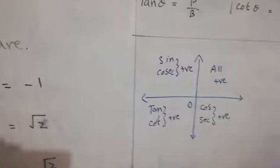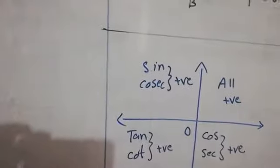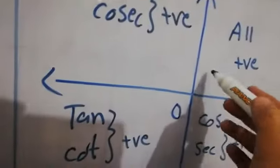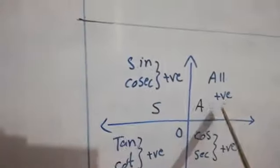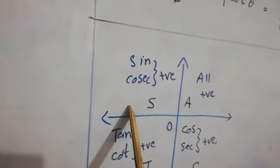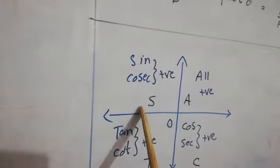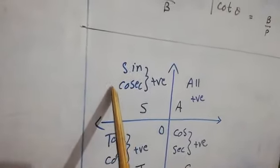One more concept: if we have four quadrants, there is a clue about the sign of the angles in each quadrant. This is known as 'add sugar to coffee.' In the first quadrant, all the ratios are positive. In the second quadrant, S stands for sin theta and cosecant — these two are positive, and the rest are negative.